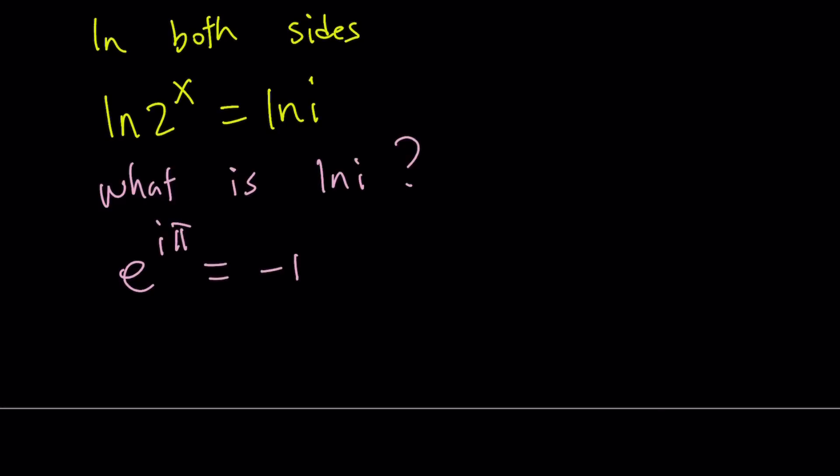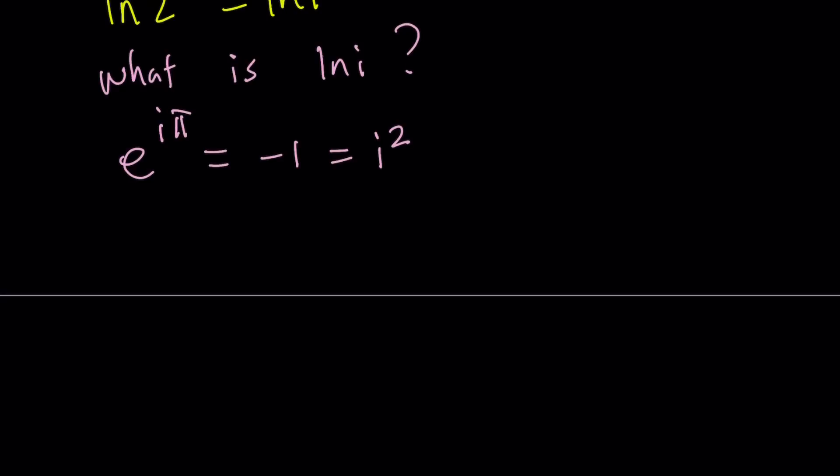And now, we can use this to find ln i. How? Let's go ahead and set the negative 1 equal to i squared. Remember, at the beginning, we defined i to be the imaginary unit whose square equals negative 1. And then, we can just go ahead and write it this way. We have e to the power i pi equals i squared.